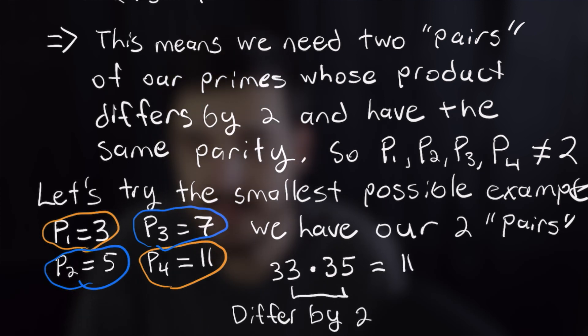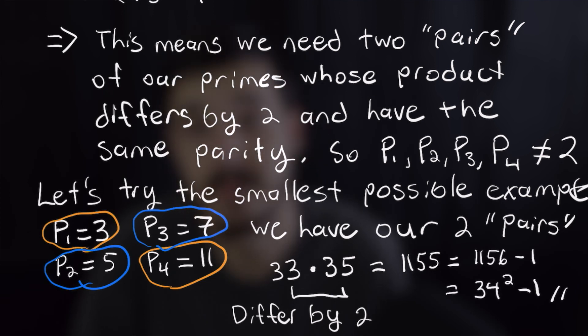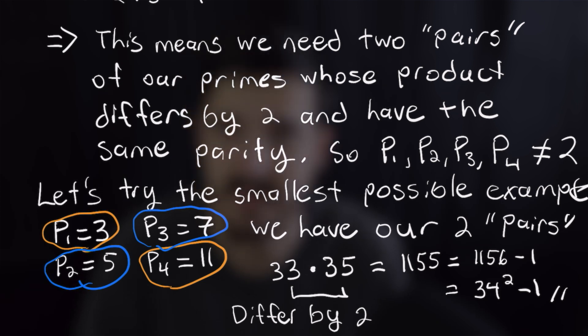So thirty three times thirty five is equal to one thousand one hundred and fifty five and we will add one to that and see if it is a perfect square and indeed one thousand one hundred and fifty six is thirty four squared. And as we tried our smallest possible primes to fit within our definition we do have our smallest possible n which is thirty four which completes this problem.